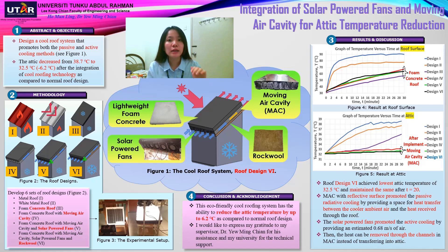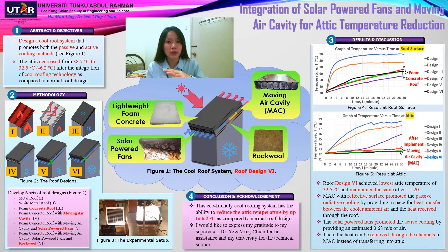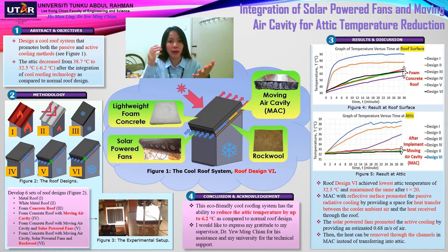In conclusion, this eco-friendly co-roofing system can reduce attic temperature by 6.2 degrees Celsius compared to a normal roof design. House cooling can be achieved with less electricity as the heat received through the sun is constantly ejected by means of passive and active cooling powered by solar energy.